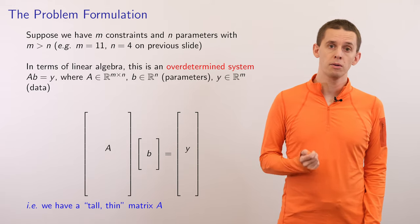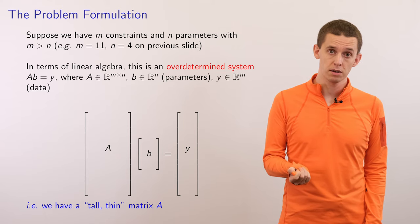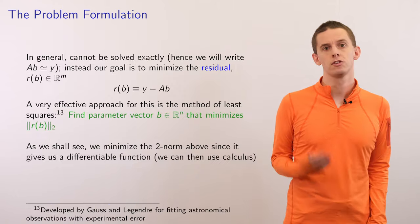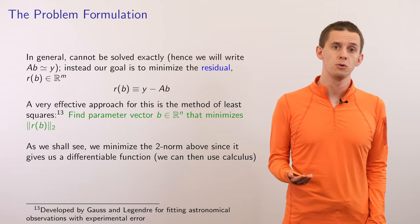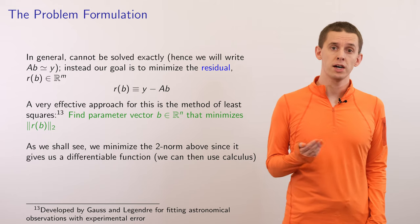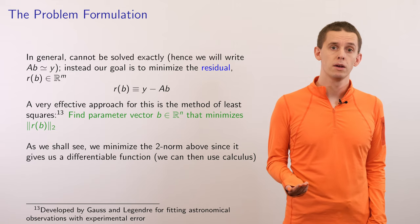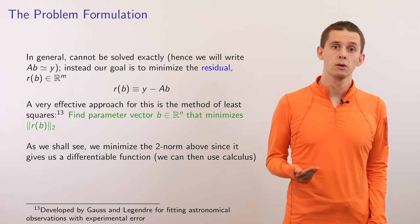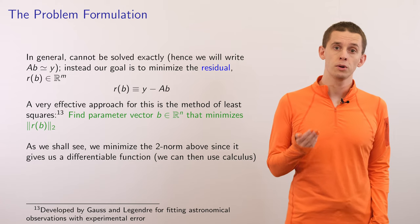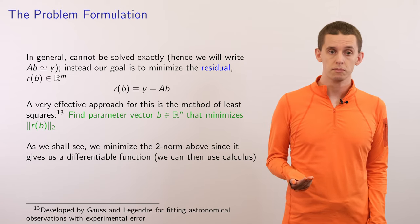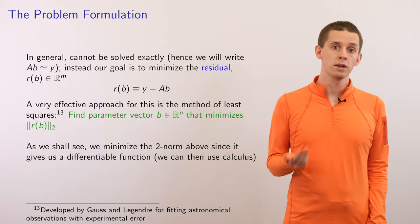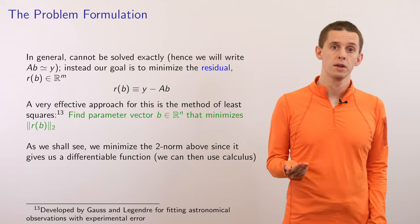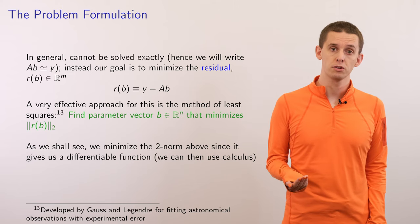Because there are more constraints than unknown parameters, in general this is not a system we can solve exactly. So we're going to take an alternative approach of minimizing the residual, defined as R as a function of B equals Y minus AB. A very effective approach for doing this is the method of least squares — specifically we're going to find the parameters B that minimize the Euclidean norm of R(B). Minimizing the Euclidean norm is a particularly good choice because our objective is differentiable, allowing us to use techniques from calculus.